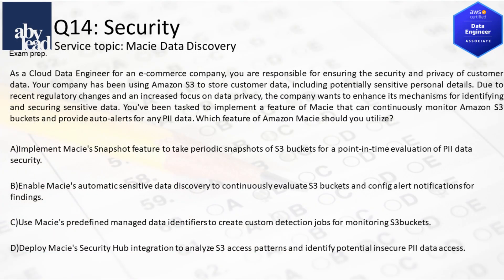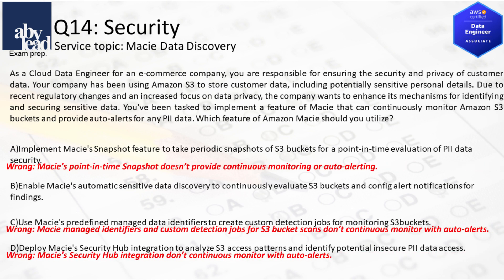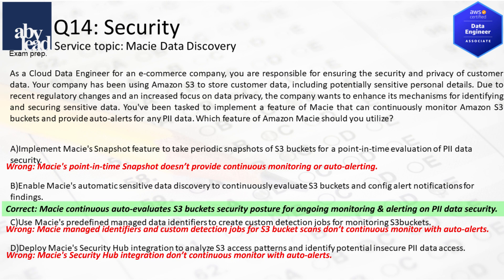Question 14: How do you use Macie to ensure S3 private data security with continuous monitoring and alerts? You can't continuously monitor with Macie's point-in-time snapshot, with Macie's managed identifiers, or with Macie's Security Hub integrations. You better work with continued Macie auto-evaluation of S3 buckets for ongoing monitoring of private data.